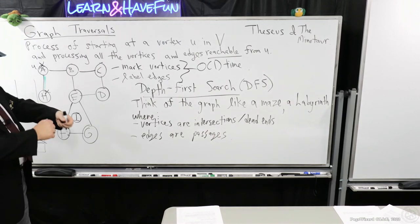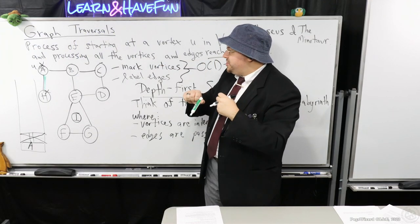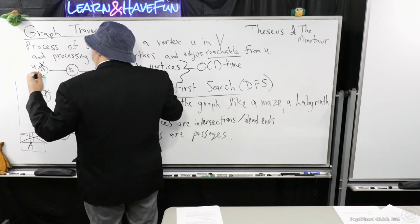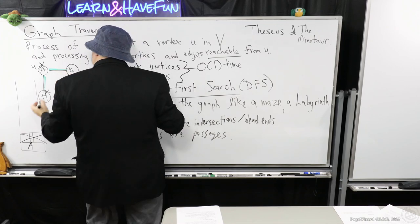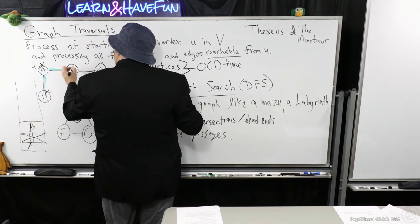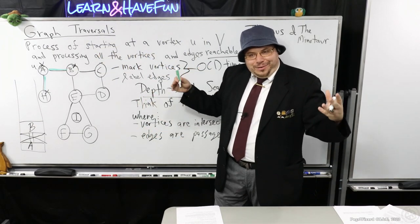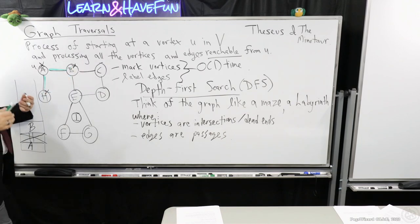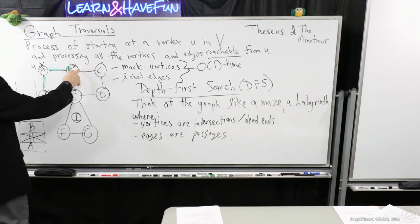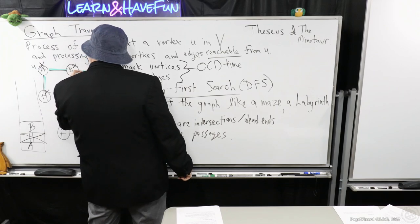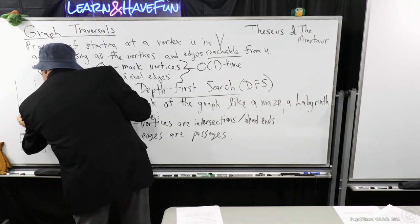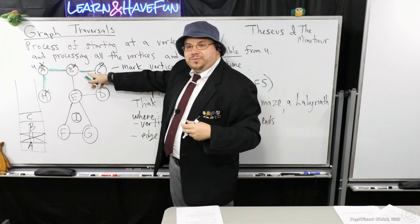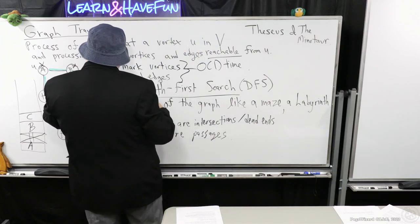Now I'm back at A. I look at my next passageway, rolling out the string. The other endpoint of this passageway hasn't been marked, so I go down that way and I'm at B now. I mark B and go down a new passage. I'm going depth-wise into the labyrinth, and the string helps me know how to get back. So Theseus goes down and marks C, then considers incident edges, and keeps going to D.